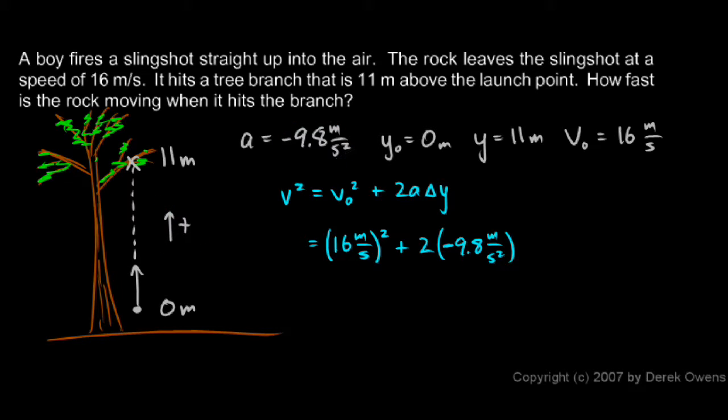So setting up the problem correctly, getting all of these little details right in the setup, is critical. So we have 2a. We need 2a delta y. And delta y is our change in y. That's 11 meters. It goes 11 meters up. That's 11 meters, and that's positive.